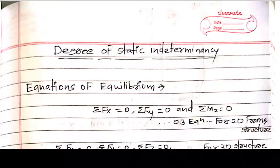Welcome all in this second lecture. Today we will see degree of static indeterminacy — what it means and how it is calculated for beams. In today's lecture we will see the beam part and in the next lecture we will see the frame and truss.